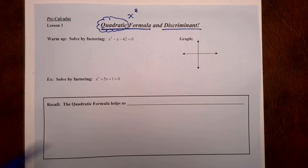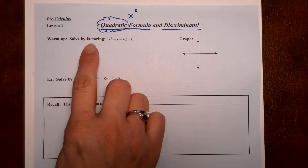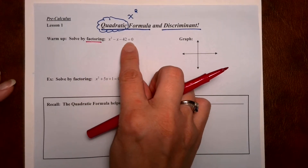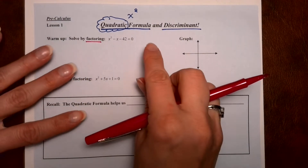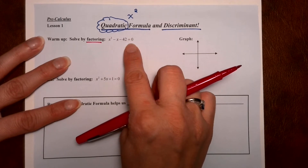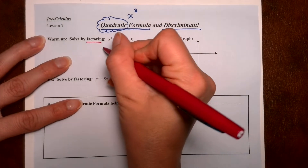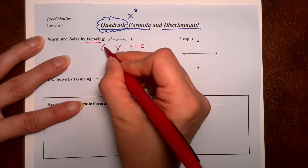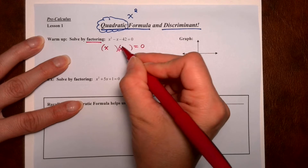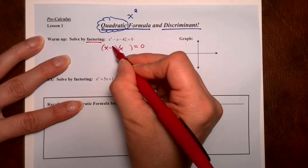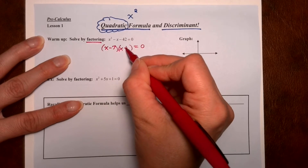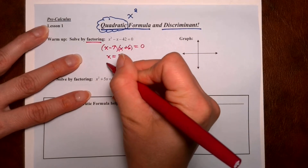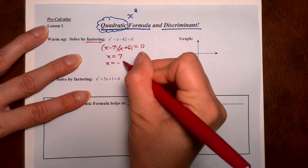Let's take a look at this first one. It says to solve by factoring. It is an equation — it has an equal sign, keep your equal sign. Everything is already on one side with the zero, so I'm going to begin my factoring. So we have x minus seven and then plus six, giving us x equals seven and x equals negative six.